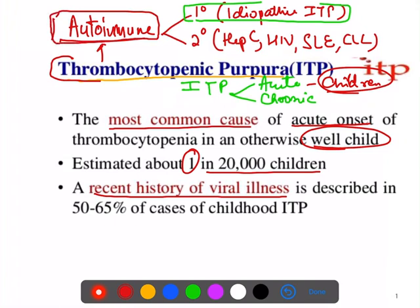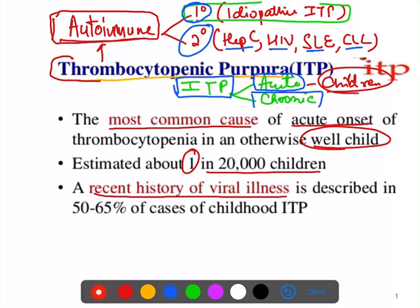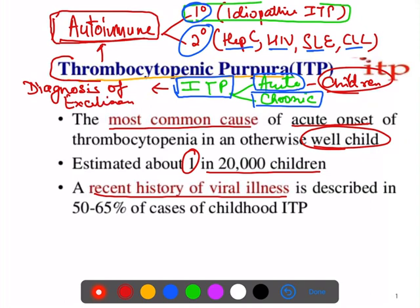To summarize: ITP is an autoimmune disease where antibodies form against platelets. It is primary when no cause is found and secondary when associated with hepatitis C, HIV, SLE, or lymphomas like CLL. ITP is diagnosed as a diagnosis of exclusion — when you cannot find any other cause for isolated thrombocytopenia, then it is idiopathic thrombocytopenic purpura.